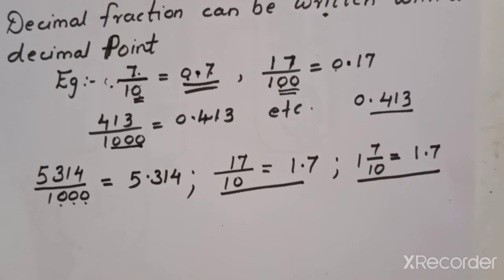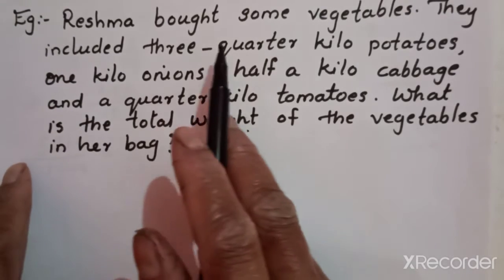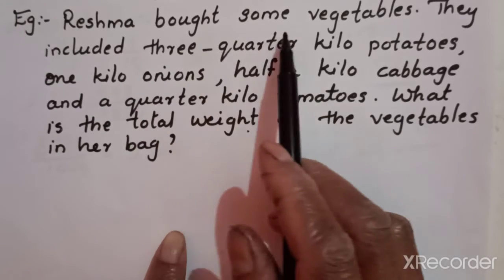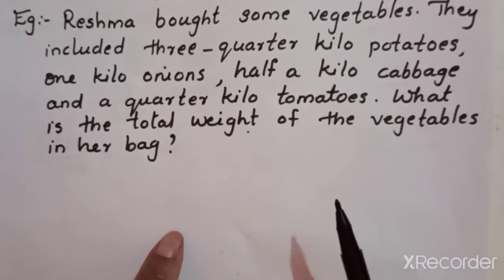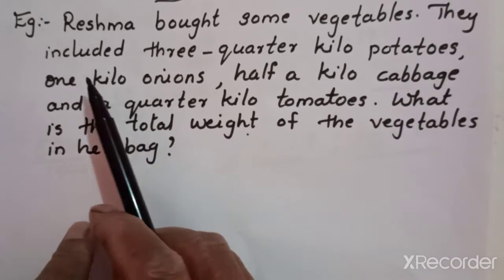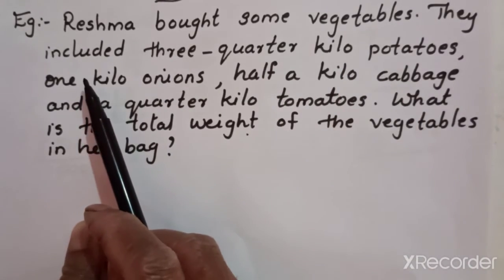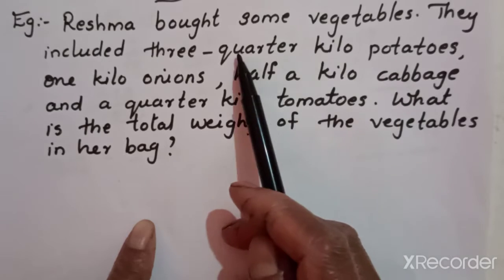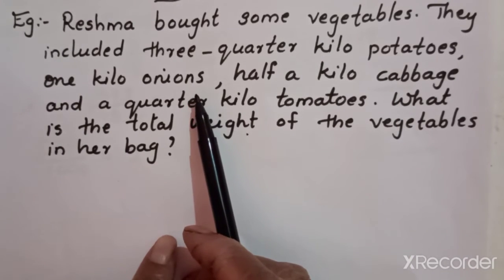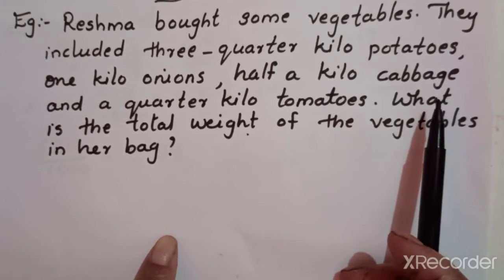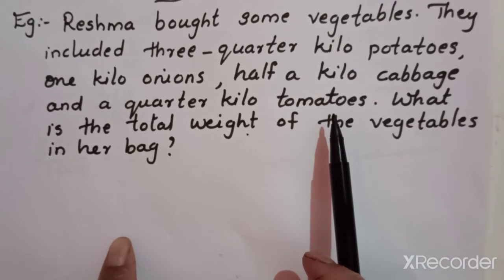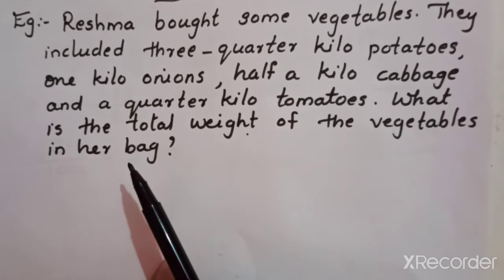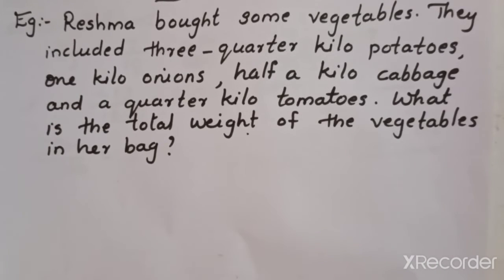So you must have got some idea of decimal fractions and common fractions. In your textbook there is an example given: Reshma bought some vegetables. They included 3 quarter kilo potatoes, 1 kilo onions, half a kilo cabbage, and a quarter kilo tomatoes. What is the total weight of the vegetables in her bag?